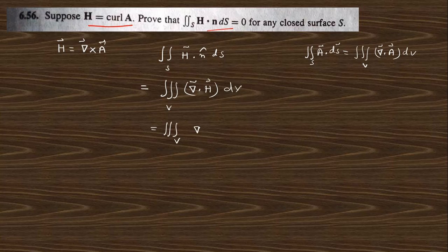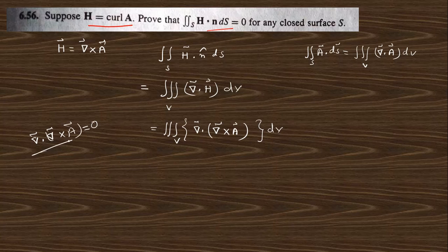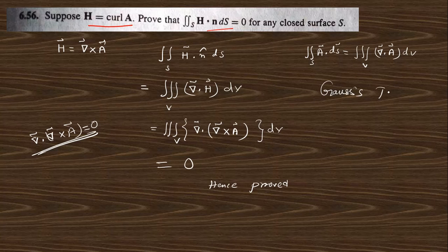This can be written as divergence of curl of any vector, that is A. And you know the vector identity: divergence of curl of any vector will be 0. This is the vector identity from the Spiegel book, that is 0. So if you put this as 0, this becomes 0 — hence proved. Just use the Gauss Divergence Theorem.